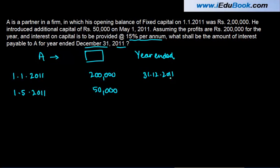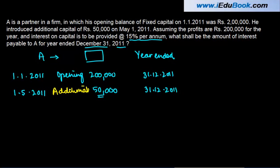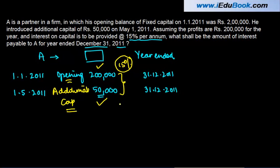The year basically ends on 31-12-2011. What is happening here is you have an opening capital and the capital introduced during the year, which is known as additional capital. You have an opening balance of the capital account and an additional capital amount. The rate of interest is 15% and you are asked to find out how much interest on capital is to be provided. Interest on capital is provided both on the opening balance as well as the additional balance.